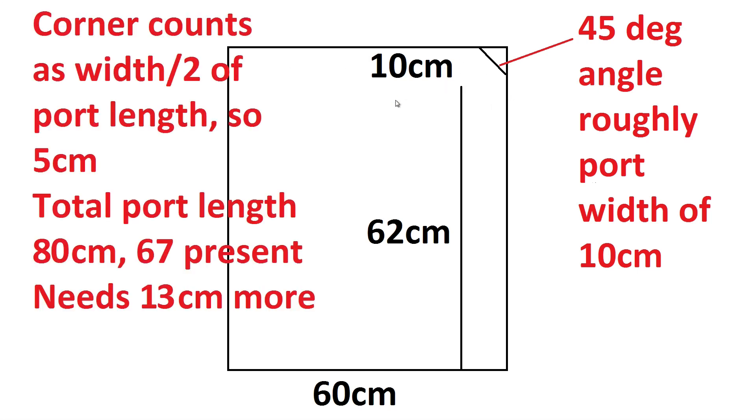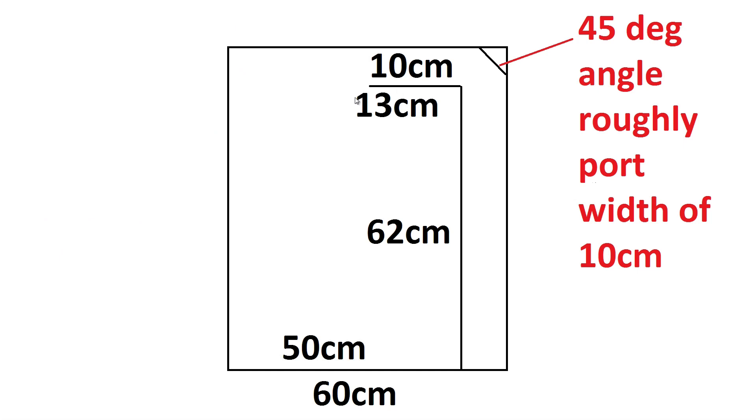So this corner here, in terms of port length, does add length to the port and it adds roughly the width of the port divided by 2. So this one adds 5 centimeters. Since the port width is 10 centimeters, this corner here adds about 5 centimeters, which means since the total port length has to be 80 centimeters, here we've got 62 centimeters plus 5, so we've got 67 centimeters. We need 13 more for this side here. That's what we've got.